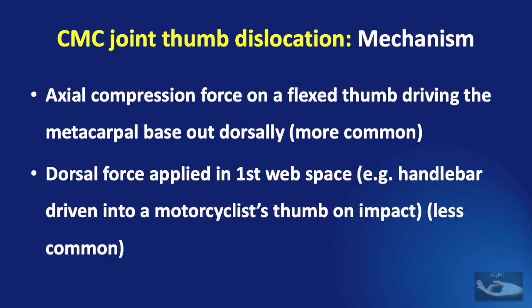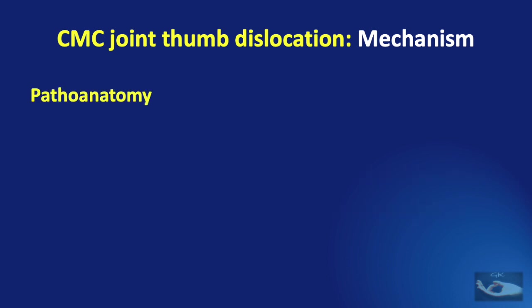A dorsal force applied in the first web space — for instance from a handlebar driven into a motorcyclist's thumb on impact — can also cause dislocation of the carpometacarpal joint, though it is less common.